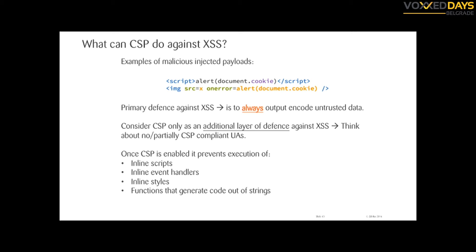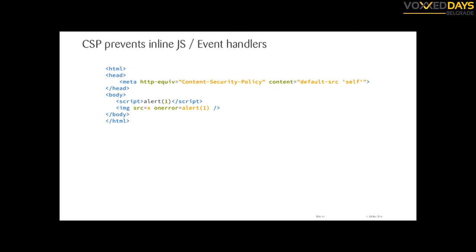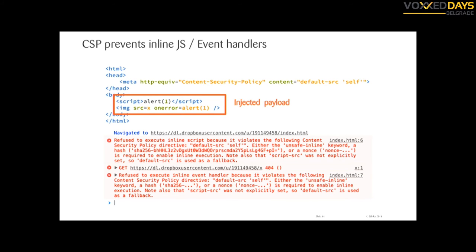CSP is kind of a second layer of defense. Not all browsers are CSP-compliant yet, so if a browser isn't, you're not protected — that's why it's secondary. By default when you enable CSP, it doesn't allow inline scripts, disables all event handlers, disables inline styles, and disables all dangerous JavaScript functions that take a string and generate code from it. So if an attacker manages to inject a payload and CSP is enabled, the browser refuses and says it violated the CSP policy.